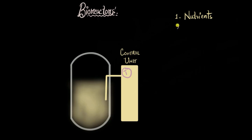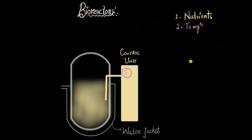The control unit can sense deviations in temperature but cannot change it directly. One way to change the temperature is to have a water jacket around the bioreactor vessel, through which hot or cold water is rushed in with an outlet further down. When hot water is pumped in, the vessel becomes hot; when cold water is used, the temperature decreases. It's very much like the hot water bath we do in labs, where we put test tubes in hot or cold water depending on how we want the contents to be.